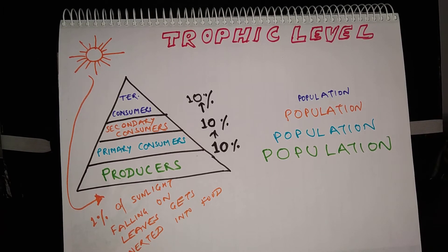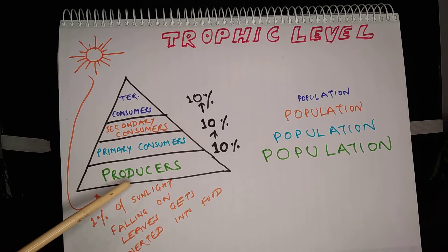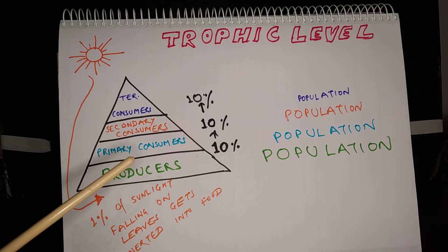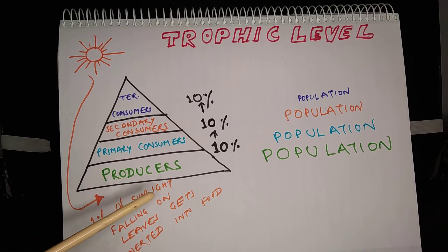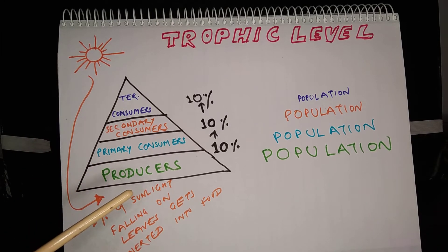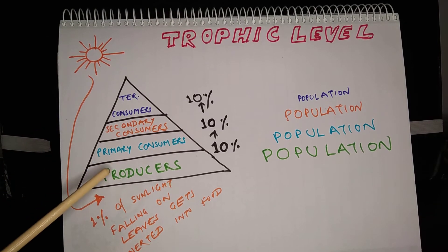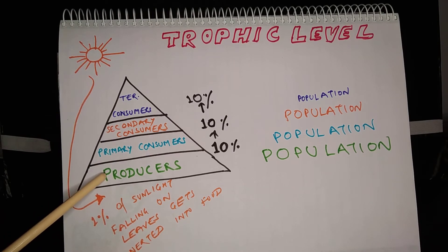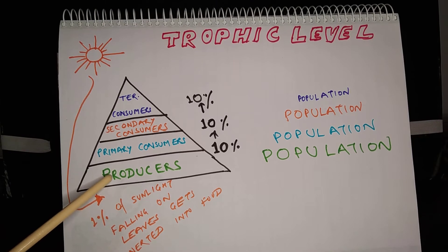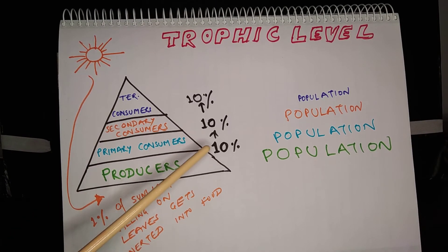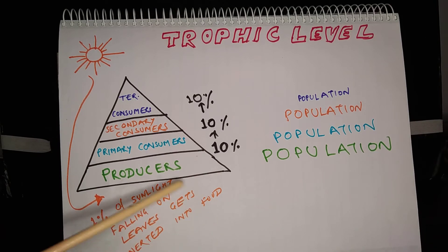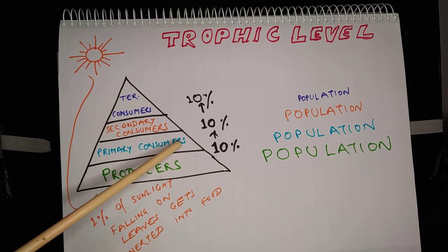Let us see how energy is channelized through different trophic levels. Of all the energy falling on the leaves of a green plant, just 1% of it is utilized and gets converted into food. The green plant has to do certain work like respiration, and some energy is also wasted as heat. So 90% of the energy which the organism at a particular trophic level receives is utilized for its own work, leaving just 10% of the energy as biomass, and this 10% is available as food for organisms of the next trophic level.